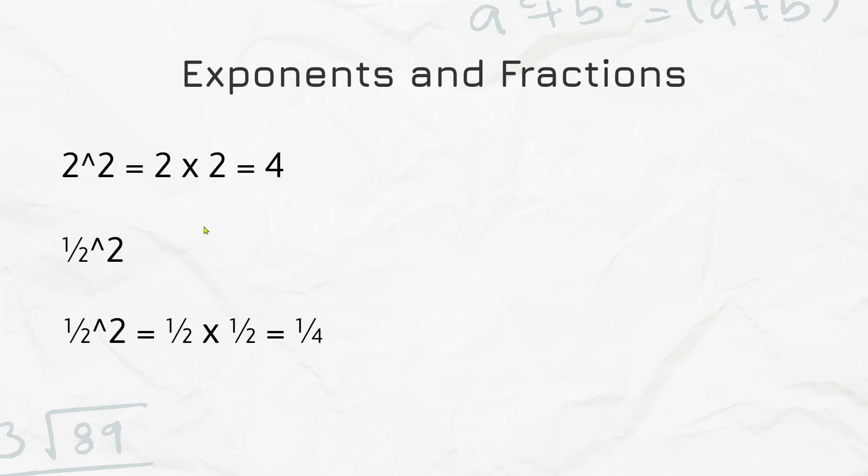Well, it's basically just the exact same. So you multiply 1 half by 1 half, and if we know how fraction multiplying works, we do 1 times 1, which is 1, and then 2 times 2, which is 4, so we get 1 fourth.